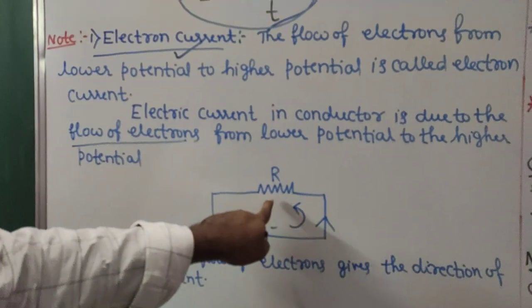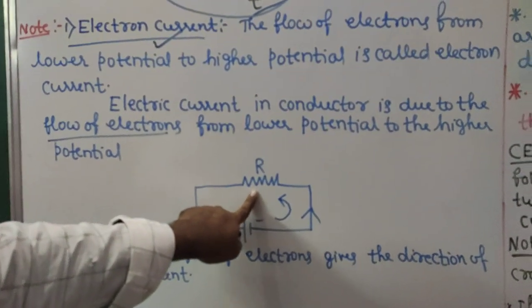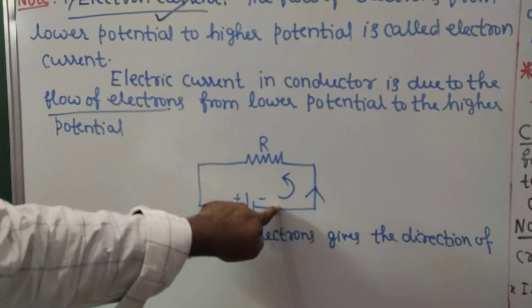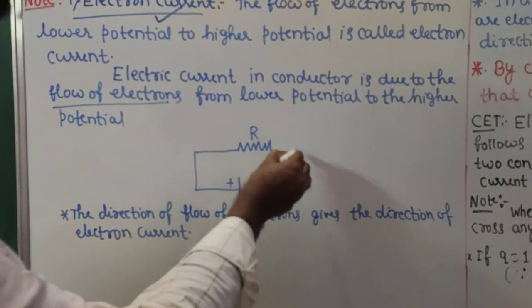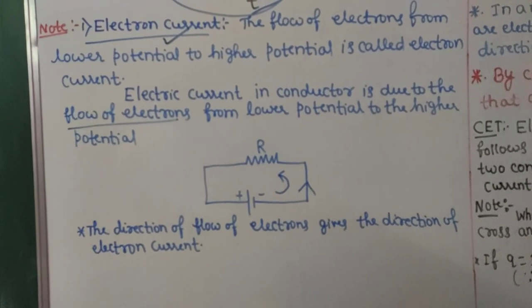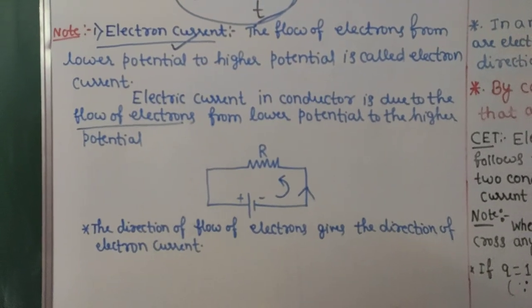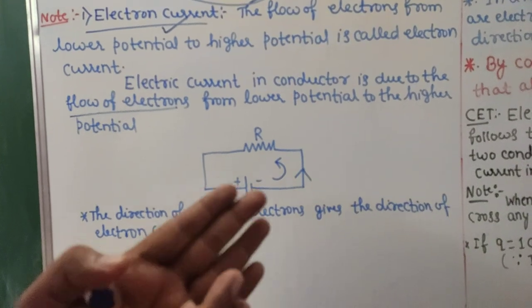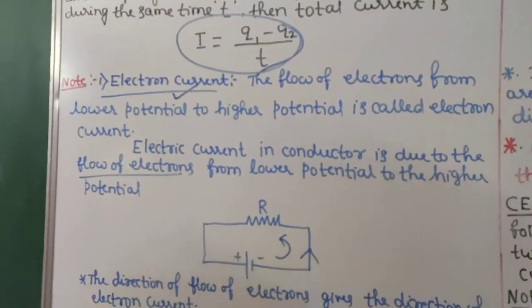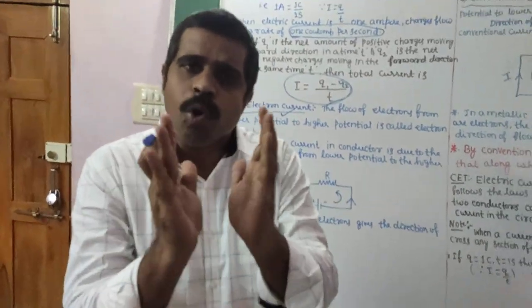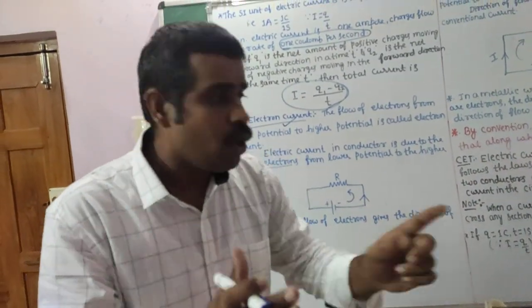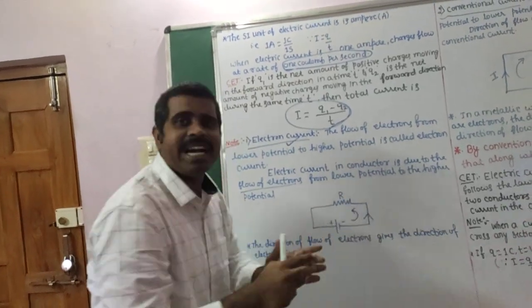There is one conductor with resistance R connected to a battery. The flow of electrons is from lower potential to higher potential — for example, from 4 volts to 7 volts. This flow of electrons from lower potential to higher potential constitutes electron current. Electric current in a conductor is due to the flow of electrons from lower potential to higher potential.